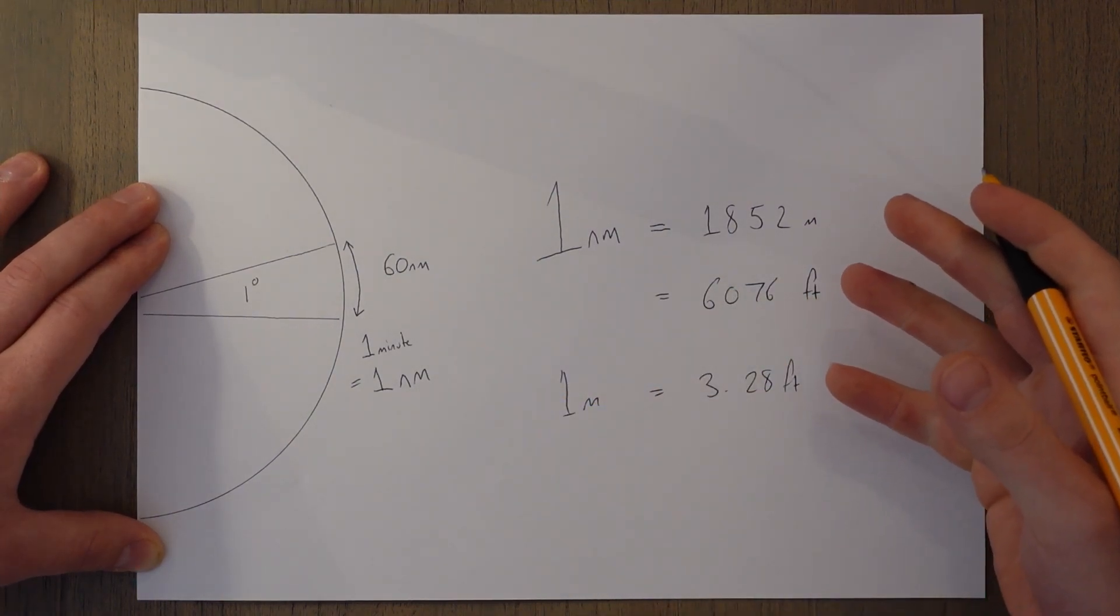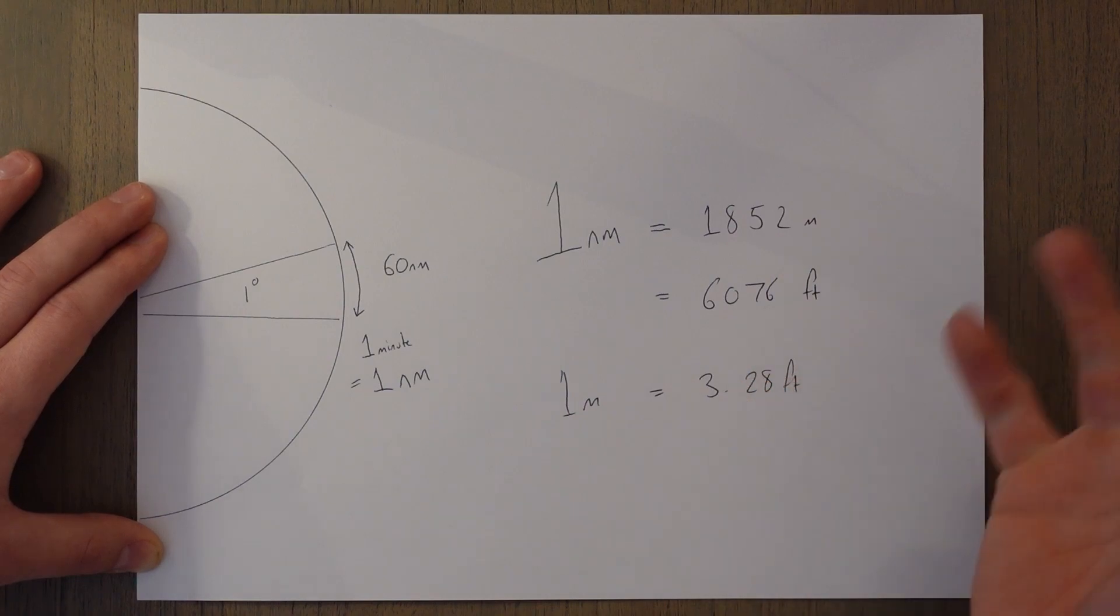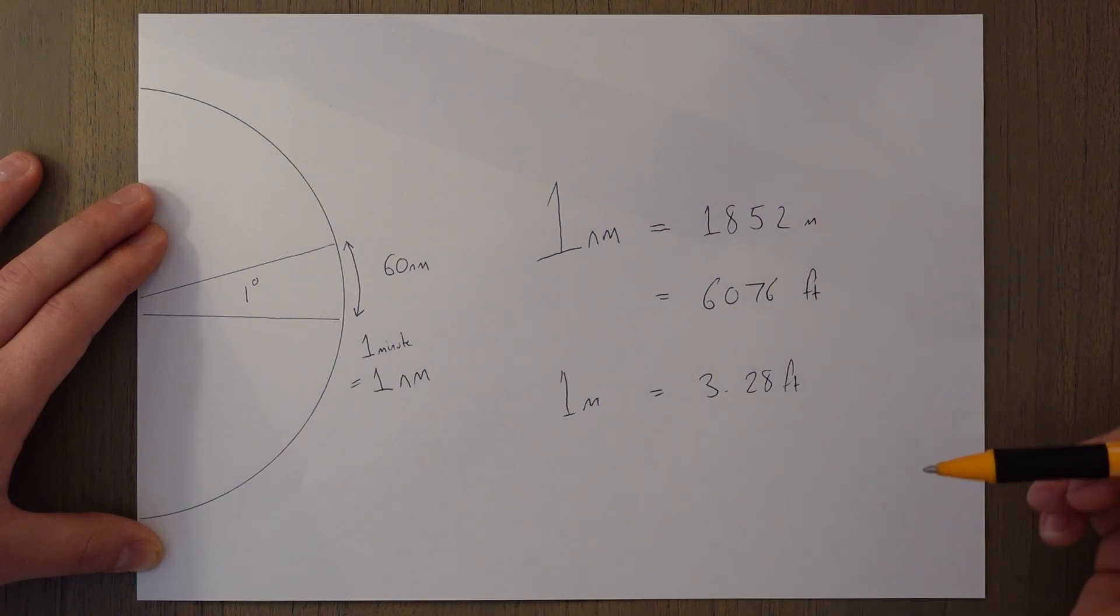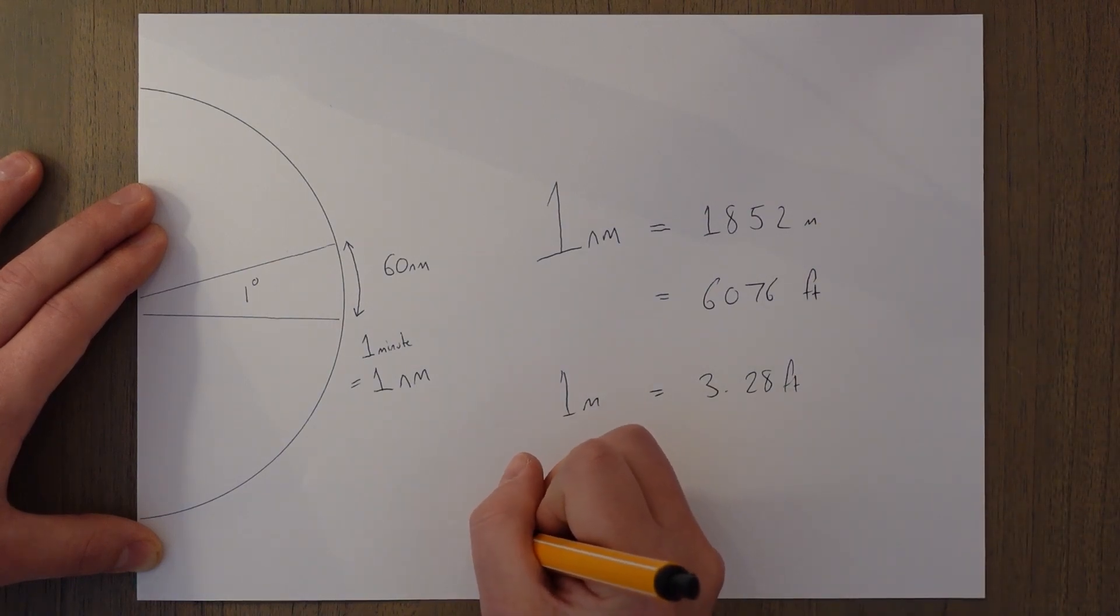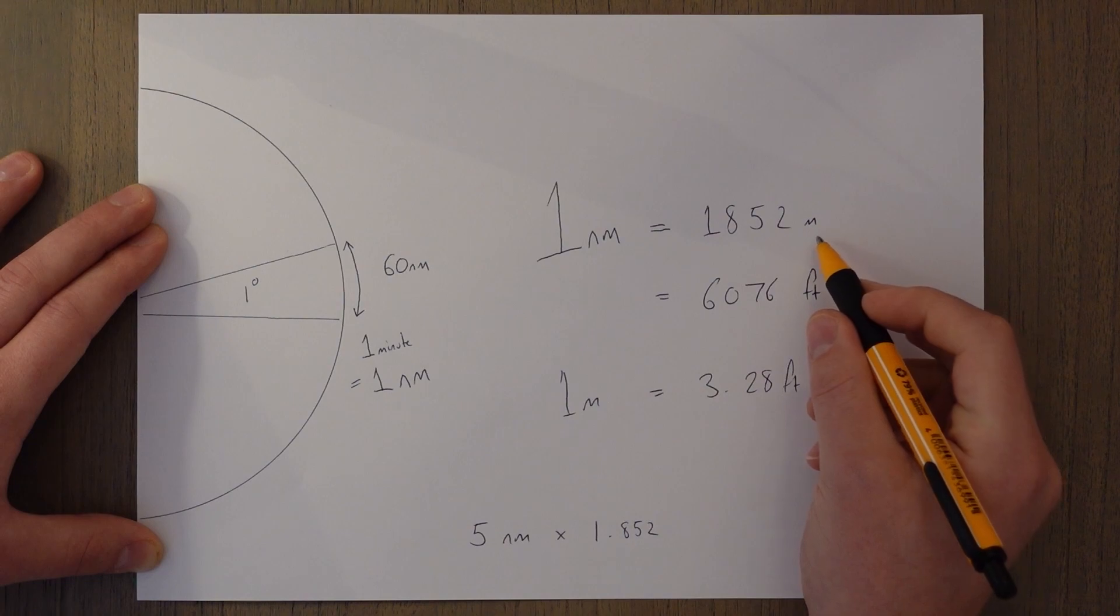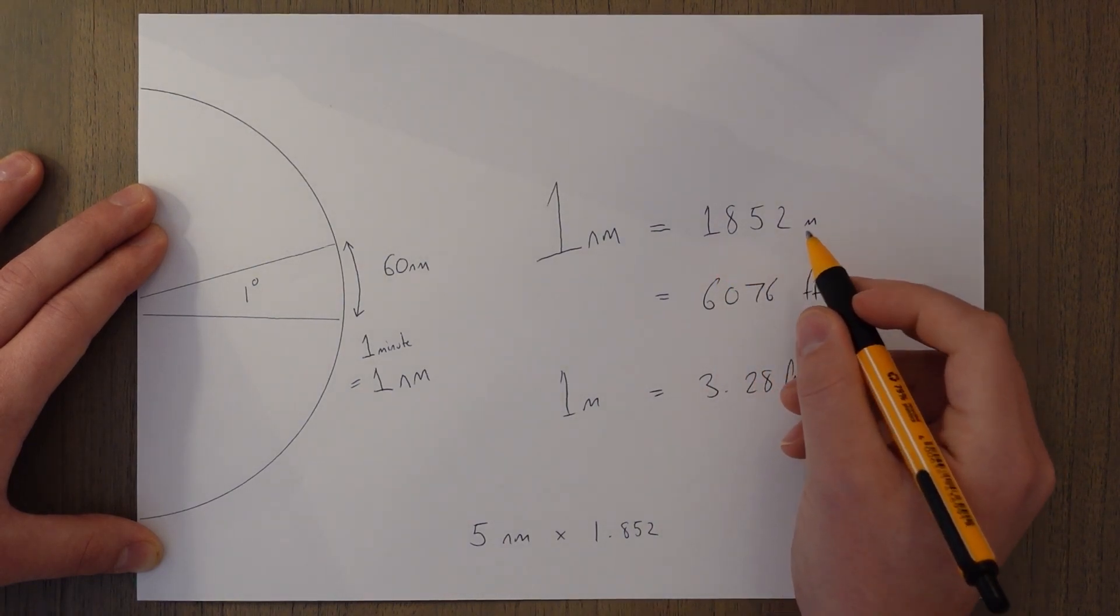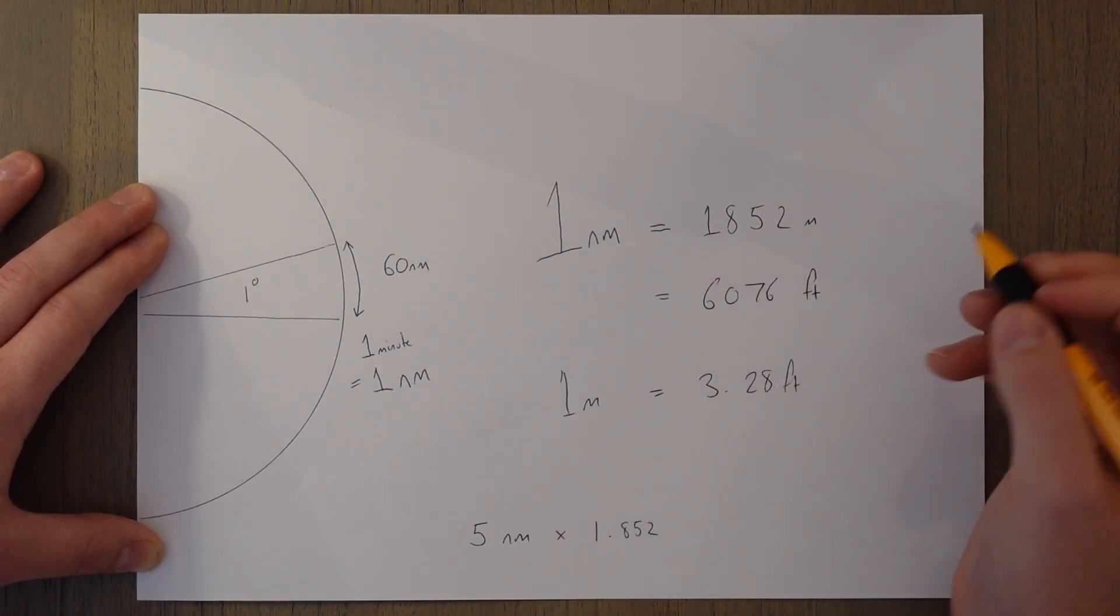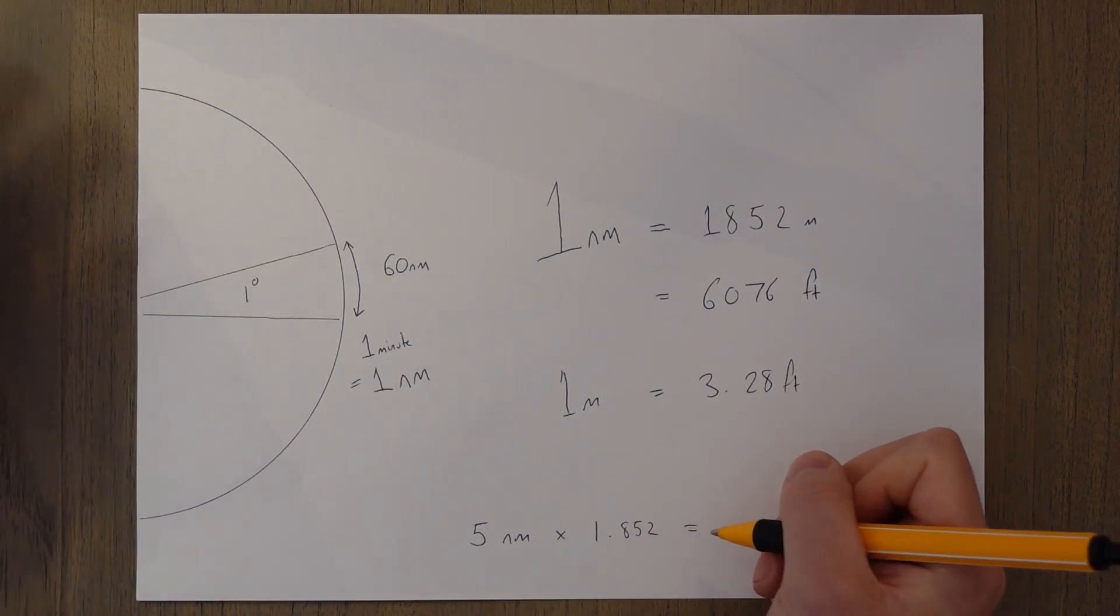So let's just check our conversions to see if they work. I'm going to pick, I don't know, five nautical miles and I want the value in kilometers and feet. So five nautical miles times by 1.852, because it's 1852 meters or 1.852 kilometers, and that equals 9.26 kilometers.